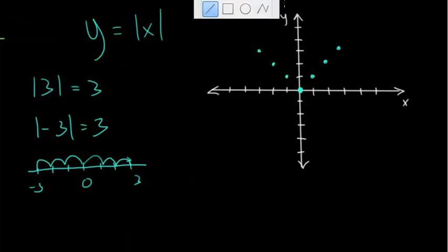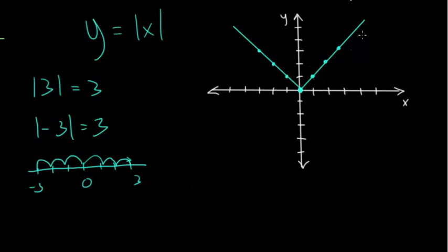So you get this interesting function — essentially a cone where you have two lines that come together at the origin. In the positive section, this is the line y equals x with a slope of one. In the negative section, the equation is y equals negative x with a slope of negative one. This is our parent function — the simplest absolute value function we can draw.